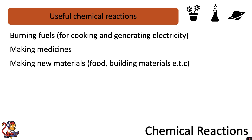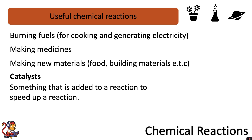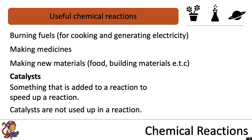When we use chemical reactions in industry, we want them to happen very quickly. In this case, a catalyst is added to the reaction. A catalyst is something that is added to a reaction to speed up the reaction. Catalysts are not used up in a reaction, so you can reuse them again and again. They are not written in the word equations, because they are not something that is reacting — they are simply added to speed up the reaction.